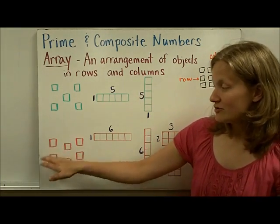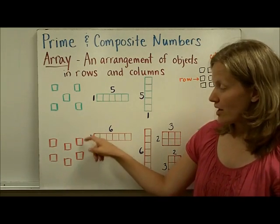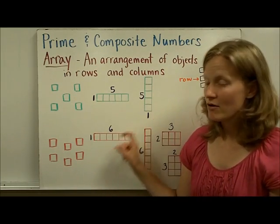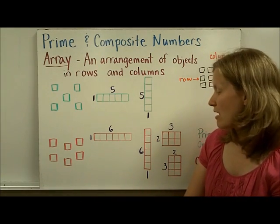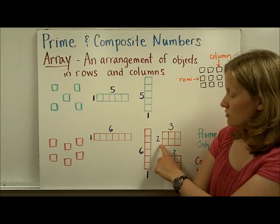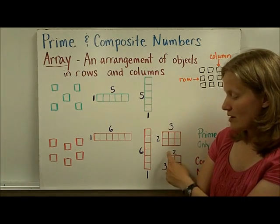Down here, if I give you six on the other hand, you can do the one by six, the long array or rectangle, and the six by one. But there's another option to arrange it in columns and rows. You can do two by three or three by two.